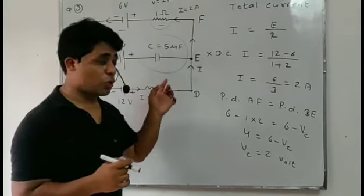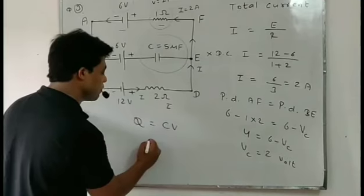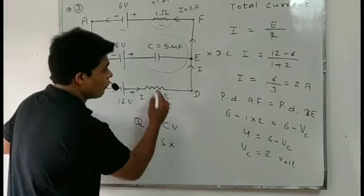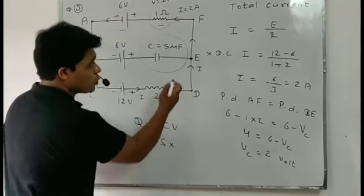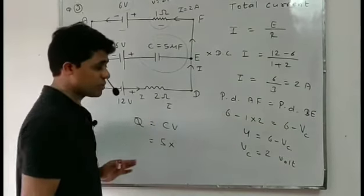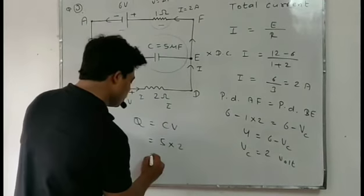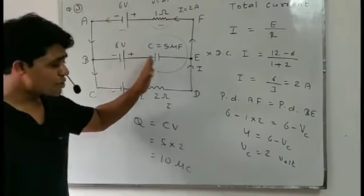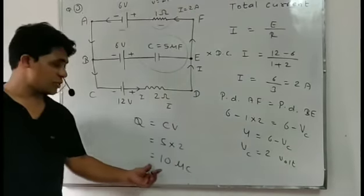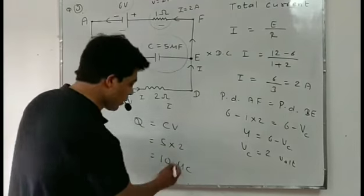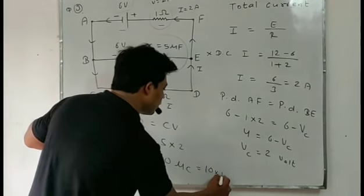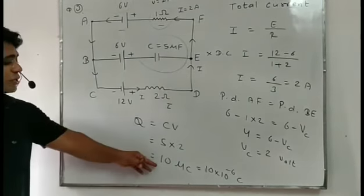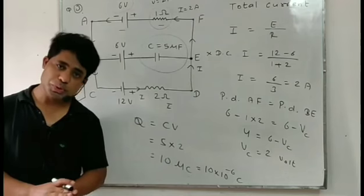The potential at the 5 microfarad capacitor is 2 volts. Now we also have to find the charge, using Q = CV. C = 5 microfarad = 5 × 10⁻⁶ farads, and V = 2 volts. So Q = 5 × 2 = 10 microcoulombs, which can also be written as 10 × 10⁻⁶ coulombs. So the charge on the 5 microfarad capacitor is 10 microcoulombs.